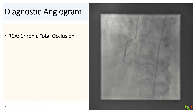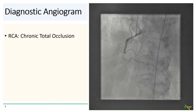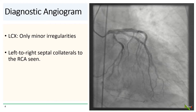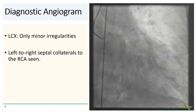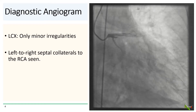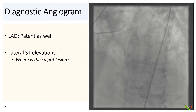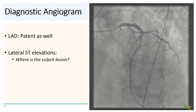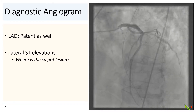On diagnostic angiogram, the RCA has a chronic total occlusion in its midsection. The left circumflex had only minor irregularities. There were numerous left-to-right septal collaterals to the RCA. The LAD was actually patent as well, but the patient had real lateral ST elevations. So where is the culprit lesion?